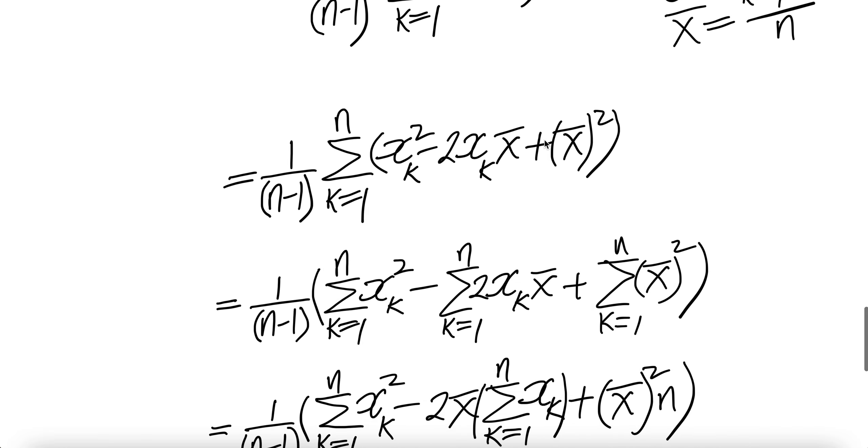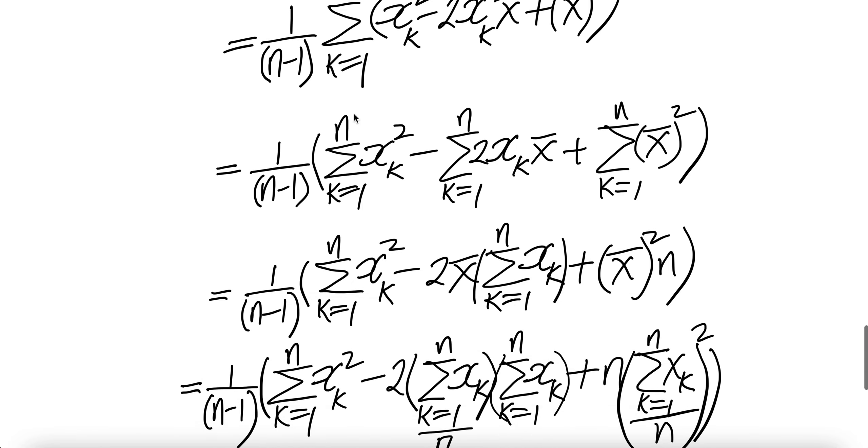Sum of different and addition is a different addition of the sum. So each one of these gets its own summation. This piece, keep it here. This piece, anything that doesn't depend on k, move it out. Doesn't depend on k, out. So it'd be 2 bar x times summation of xk, k equal 1 to n.